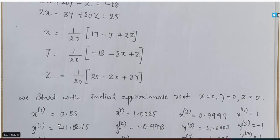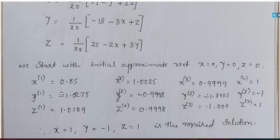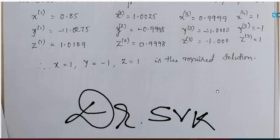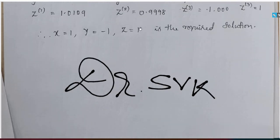Putting x = 0, y = 0, z = 0, I computed x1, y1, z1, then x2, y2, z2, then x3, y3, z3, and finally x4, y4, z4. The solution converges to 1, minus 1, and 1. Therefore, the required solution for the given system of equations is x = 1, y = −1, and z = 1.